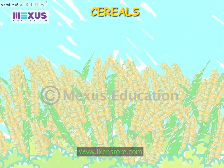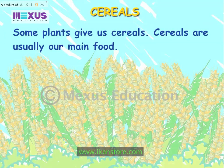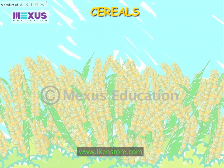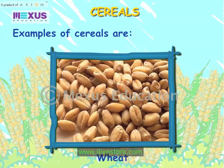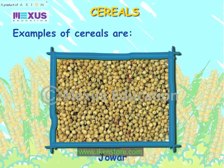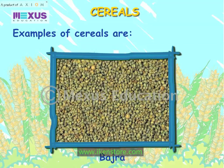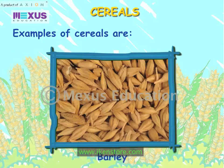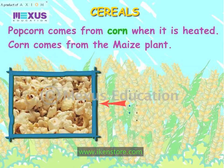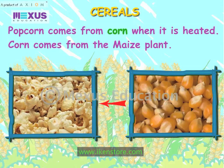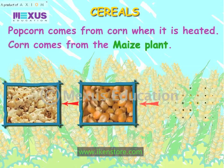Cereals. Some plants give us cereals. Cereals are usually our main food. Examples of cereals are wheat, rice, jawar, bajra, maize and barley. Popcorn comes from corn when it is heated. Corn comes from the maize plant.